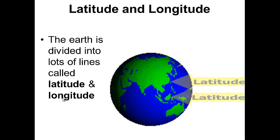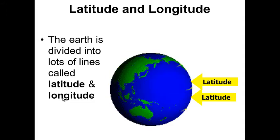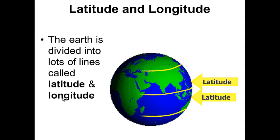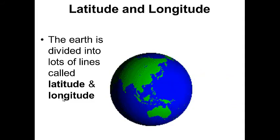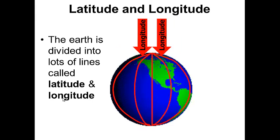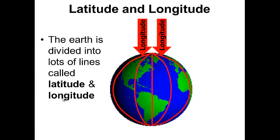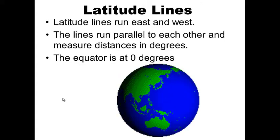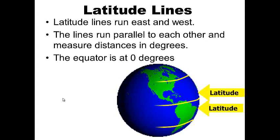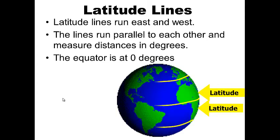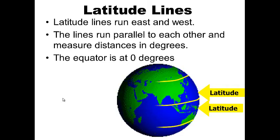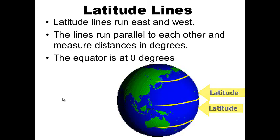We have latitude lines — these are horizontal. And we have longitude lines — these lines are roughly vertical, they go north to south. Latitude lines run east and west and these lines run parallel to each other, measuring distances in degrees. The equator is at zero degrees.